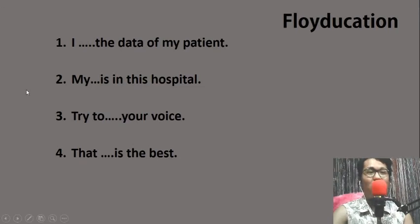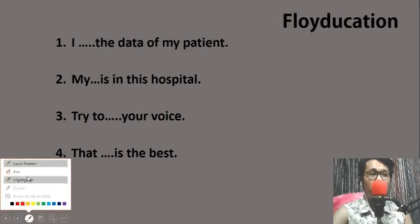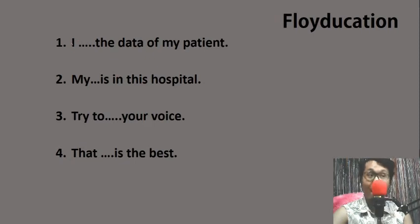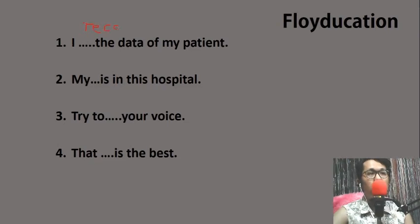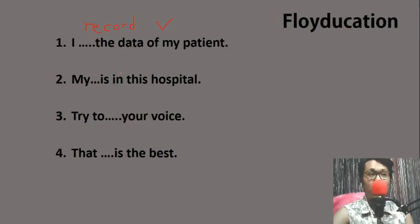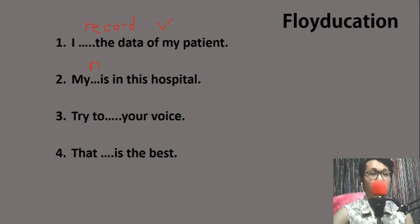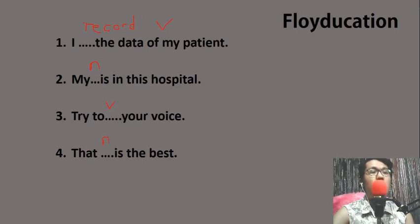I hope you got the correct answers. Number one: 'I blank the data of my patient.' The subject 'I' is followed by a verb, so: 'I record the data of my patient' — verb. Number two: 'My blank is in the hospital.' That is a noun: 'My record is in the hospital.' Number three: 'Try to blank your voice.' That's followed by 'to' plus a verb: 'Try to record your voice' — verb. Number four: 'That blank is the best.' We use a noun: 'That record is the best.'